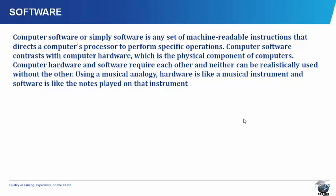Computer software contrasts with computer hardware, which is just a physical component of computers. Computer hardware and software require each other, and neither can be used without the other. For example, using a musical analogy, hardware is like a musical instrument, and software is like the notes played on that instrument.